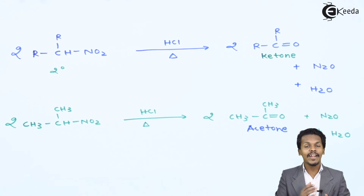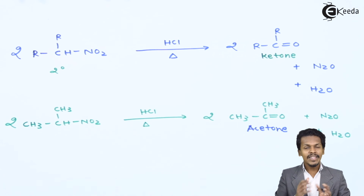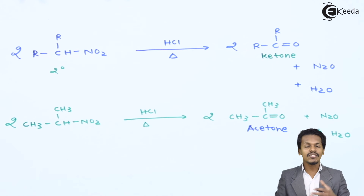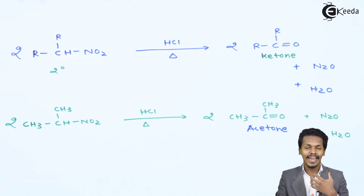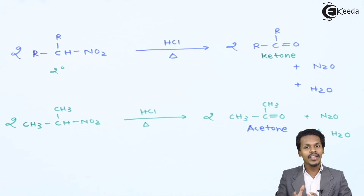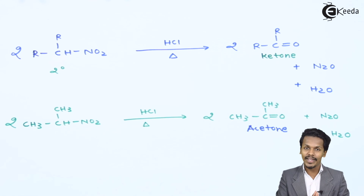Now let us talk about the hydrolysis of tertiary nitroalkane. In this case, HCl is not reactive enough toward tertiary nitroalkane, and that is why tertiary nitroalkanes do not undergo the hydrolysis process very easily. That is the reason we have only discussed the primary and secondary nitroalkane reactions here.